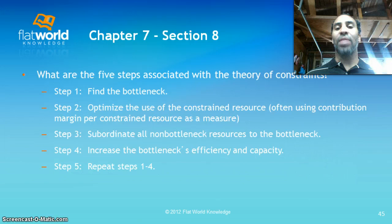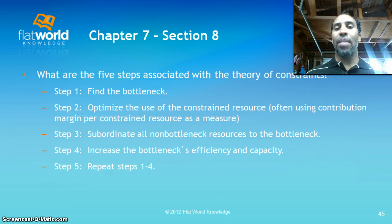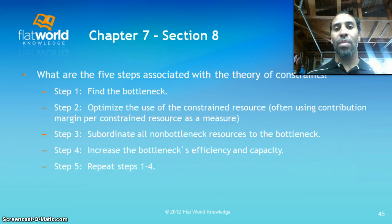The five steps associated with the theory of constraints: step one, find the bottleneck — find where things are slowing up. For example, if orders are being processed but the auditing step stalls, you may need more people to audit. Step two, optimize the use of constrained resources, often using contribution margin per constrained resource as a measure. Step three, subordinate all non-bottleneck resources to the bottleneck — everybody focuses on fixing it, perhaps working on that bottleneck for the next several months until things are straightened out.